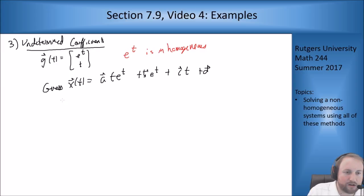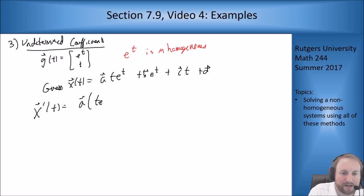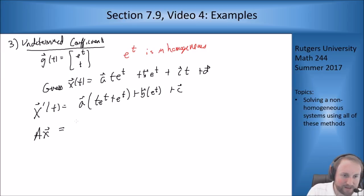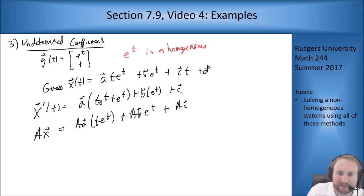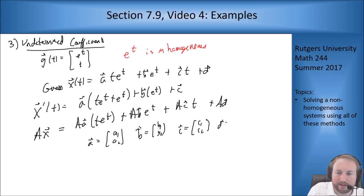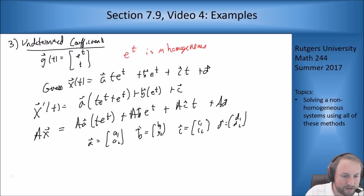Let's plug this into the equation. X'(t) = A(t·e^t + e^t) + B·e^t + C. And A·X = A·(A·t·e^t) + A·B·e^t + A·C·t + A·D. Naming components: A = [A1;A2], B = [B1;B2], C = [C1;C2], D = [D1;D2]. Computing X' − AX and grouping terms by function of t: